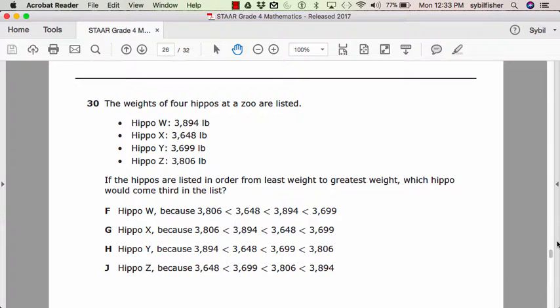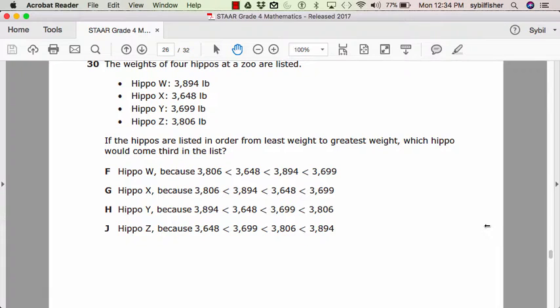F, hippo W, because 3,806 is less than 3,648 is less than 3,894 is less than 3,699. Or G, hippo X, because 3,806 is less than 3,894 is less than 3,699. Or HIPPO Y, because 3,894 is less than 3,699 is less than 3,806. J, hippo Z, because 3,648 is less than 3,699 is less than 3,806 is less than 3,894.